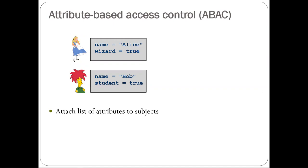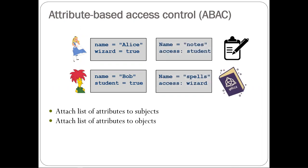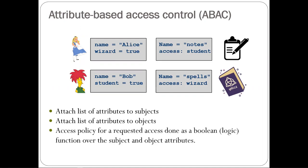The first is building your access control system based on attributes — system-defined attributes. You have a list of subjects with descriptive attributes attached. For example, Alice has the wizard flag set to true and Bob has the student flag set to true. Objects are also labeled with attributes — a spell book that only wizards can access, notes that students can access. The access policy in this simplest case is trivial: the attributes have to match in order to allow access.